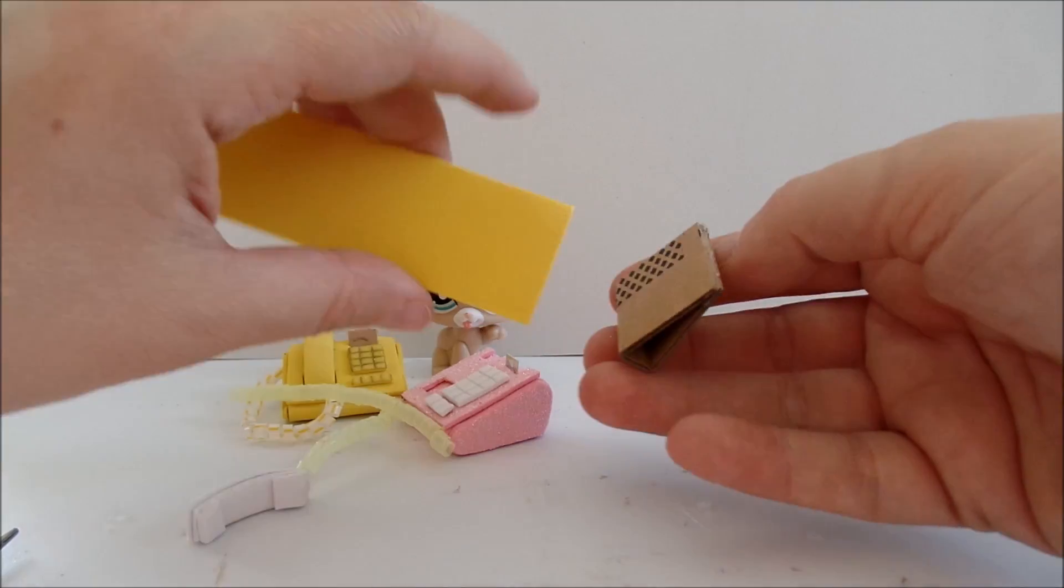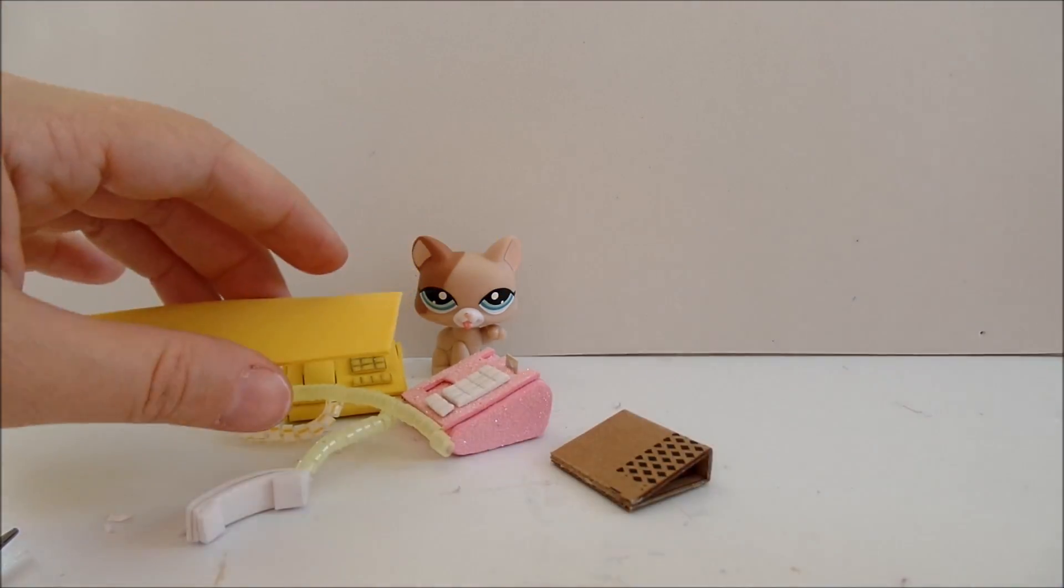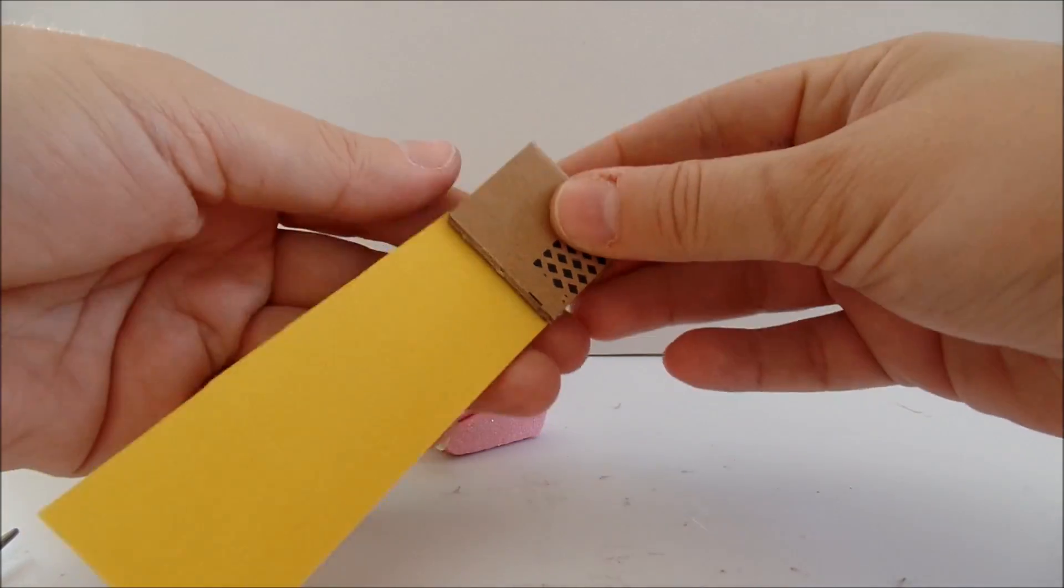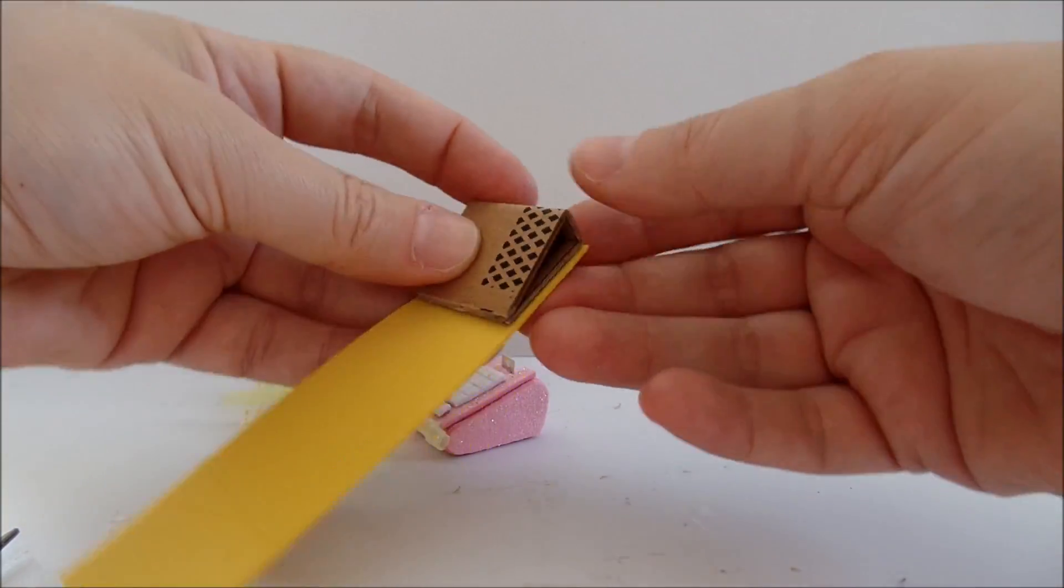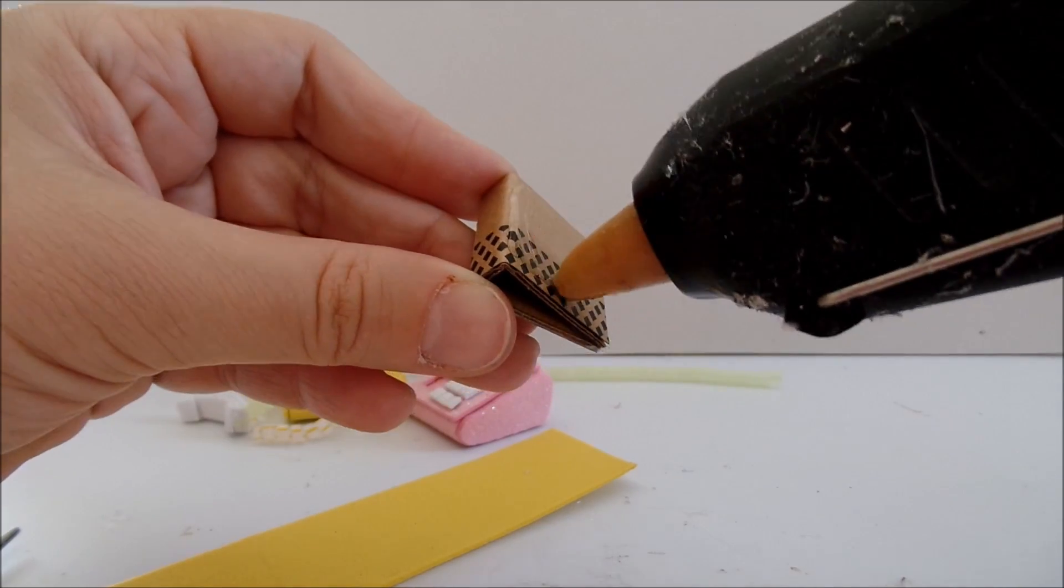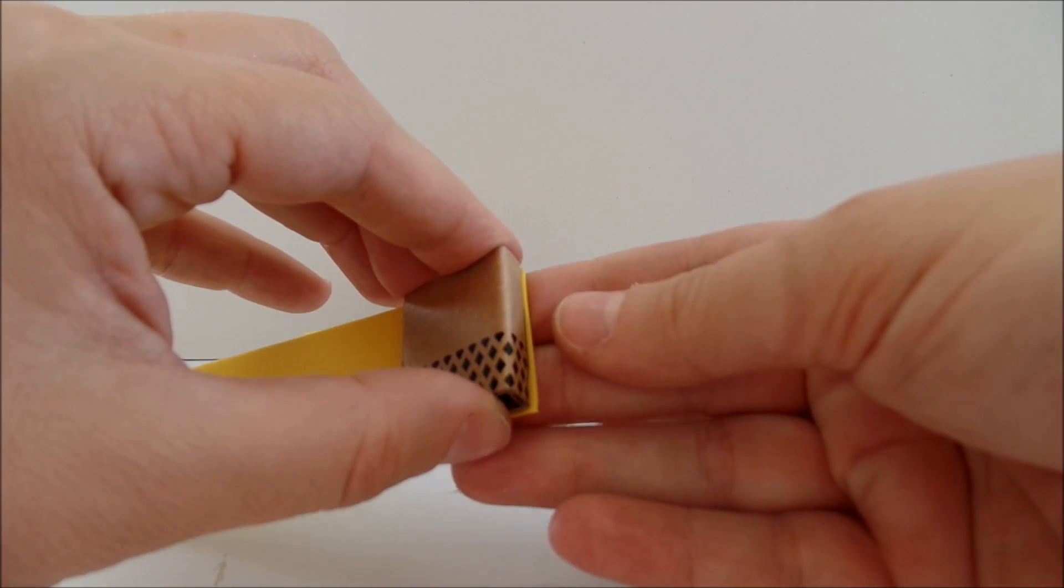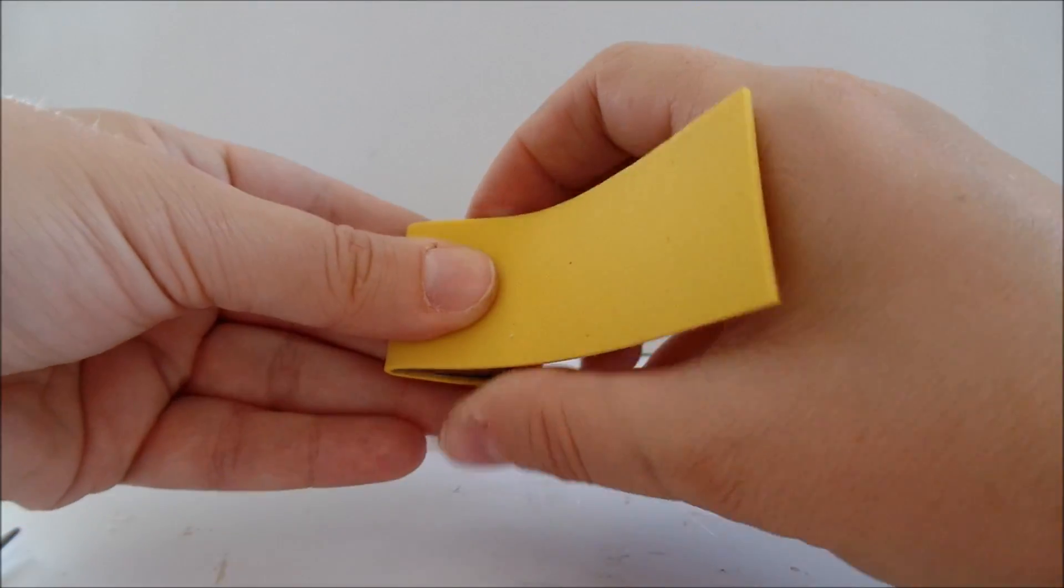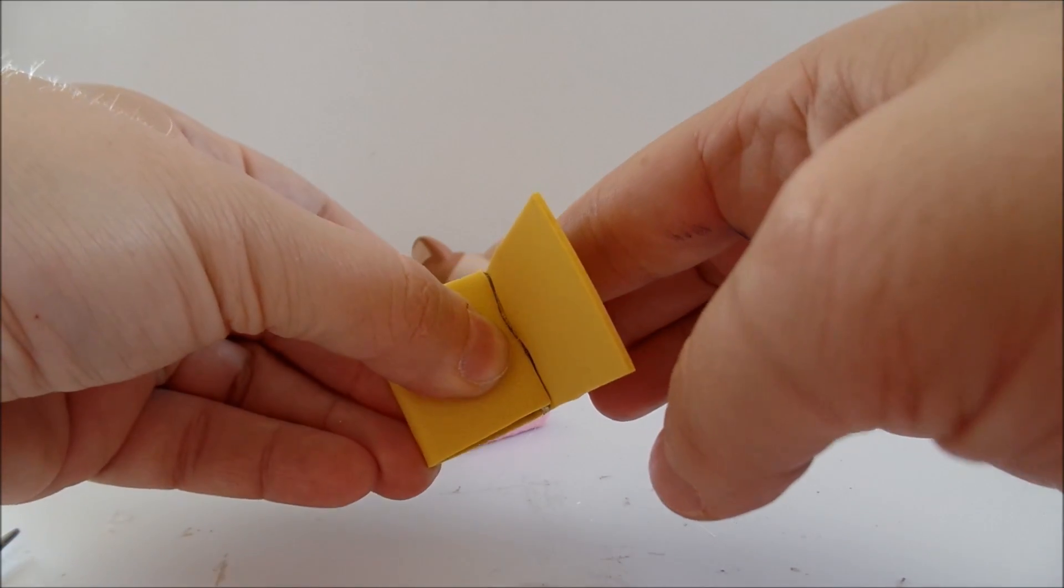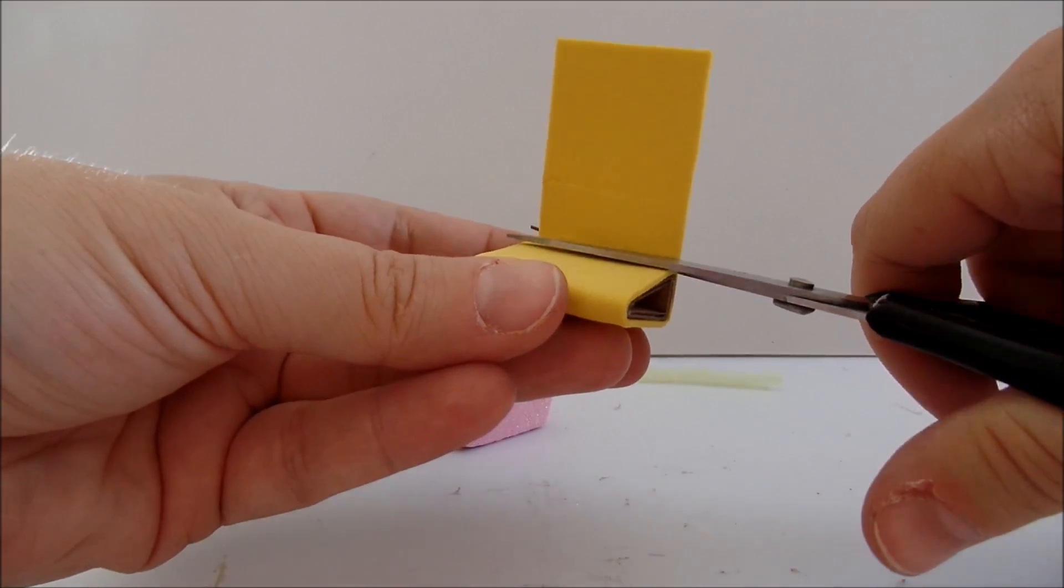Now I have here a strip of foam paper and I will glue it around the cardboard. I will start at the bottom. Trim off the excess.